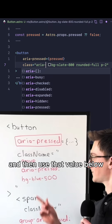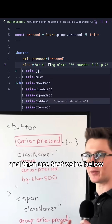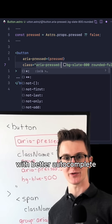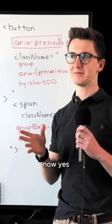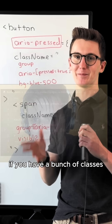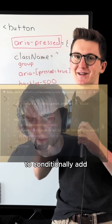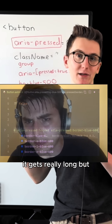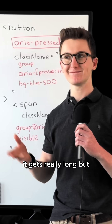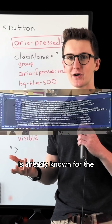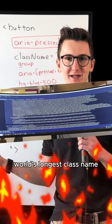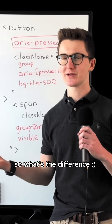And then use that value below with better autocomplete. Yes, if you have a bunch of classes to conditionally add, it gets really long. But Tailwind is already known for the world's longest class name, so what's the difference?